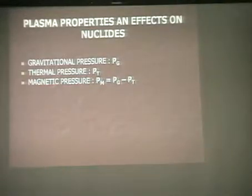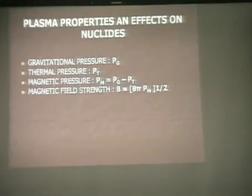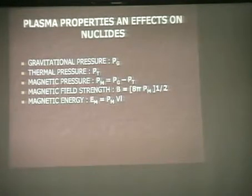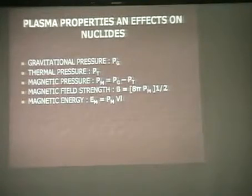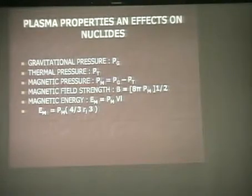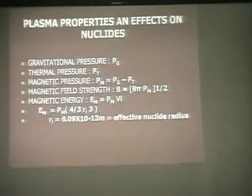You put the gravitational and thermal pressure together and you get the magnetic pressure — it's the difference between the two. From the magnetic pressure we relate the field strength: magnetic pressure times 8 pi, the square root of that gives us the magnetic field strength. The magnetic energy is derived from the magnetic pressure and from the volume of the individual components — each individual nucleus. It's a simple volume equation: four-thirds r cubed, multiplied by the magnetic pressure to get the magnetic energy.